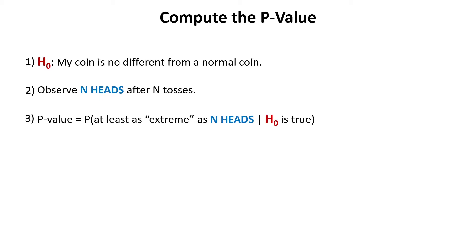Okay, and now let's get down to business and let's see how we can compute the p-values. So the first thing to do is to establish a null hypothesis, which in our case would be that our coin is no different from a normal coin. Then we observe our data, which for our coin is N heads after N tosses. And now we can compute the p-value as the probability of the cases that are at least as extreme as the N heads, given that the null hypothesis is true.